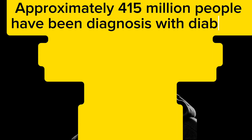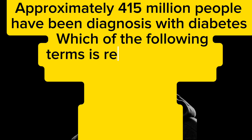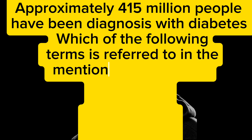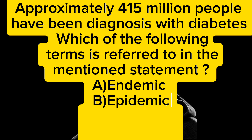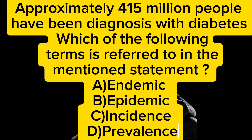Approximately 415 million people have been diagnosed with diabetes. Which of the following terms is referred to in the mentioned statement? A) endemic, B) epidemic, C) incidence, D) prevalence. The answer is D — prevalence.